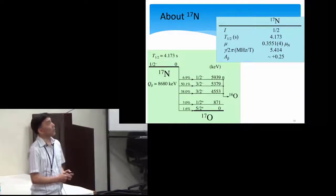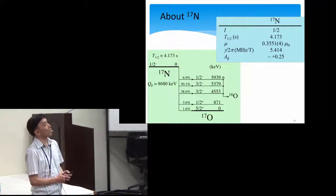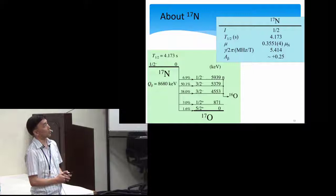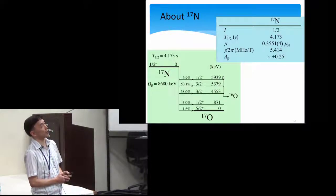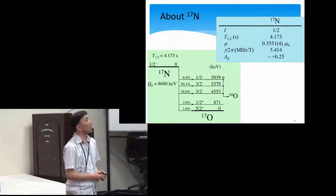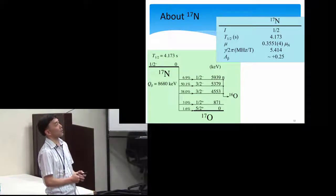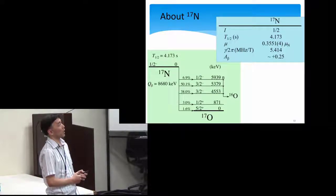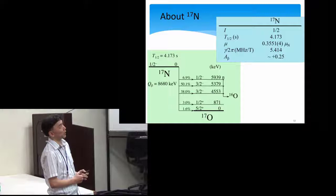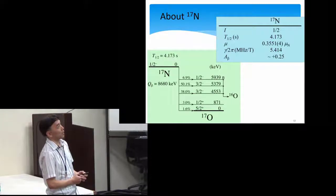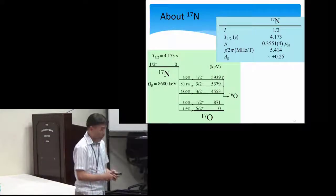And also, we have an unstable nuclear probe, nitrogen-17, which is a spin half nucleus. This half-life is about four seconds. So this is a promising candidate for using spin half nucleus for the beta-NMR probe.